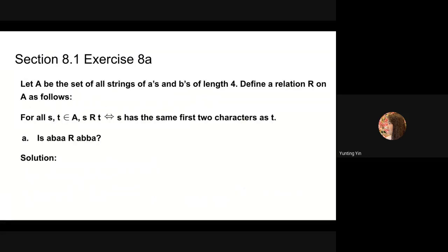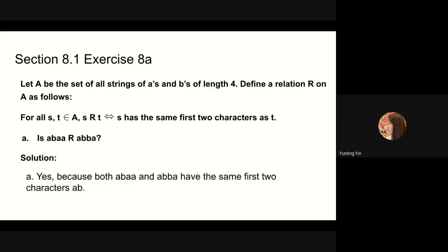Next, we will do problem 8a and 8b. Let a be the set of all strings of a's and b's of length 4. Define a relation r on a as follows: for all s, t in a, s is in relation r with t if and only if s has the same first two characters as t. We need to determine if the string abaa is in relation r with the string abba. The first two characters of abaa are ab, and the first two characters of abba are also ab. Since the two strings have the same first two characters, the answer is yes.